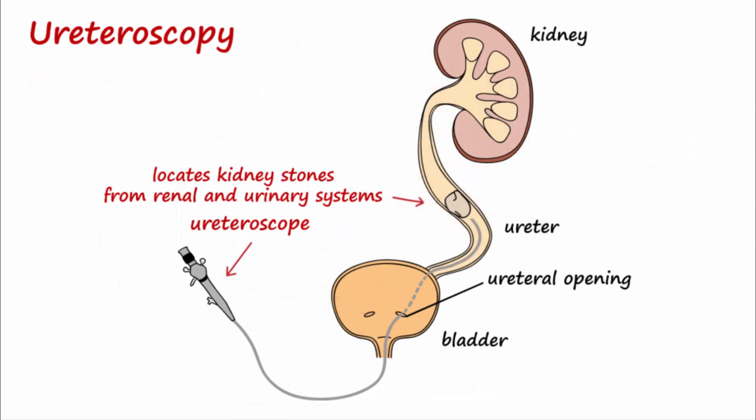Ureteroscopy is ideal for medium-sized stones in the ureter. This procedure is also done under general anesthesia and involves inserting a flexible, steerable ureteroscope into the bladder and then up into the ureters. A laser or pneumatic device is then used to pulverize the stone under vision.